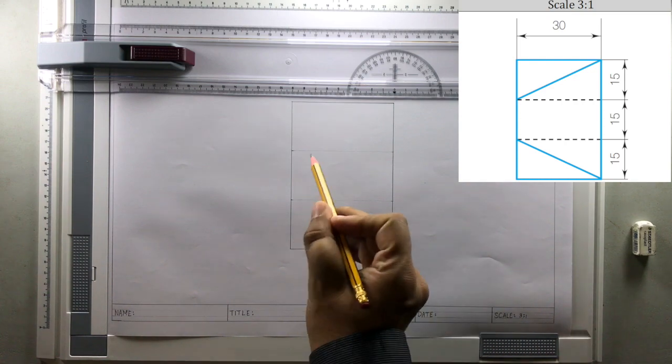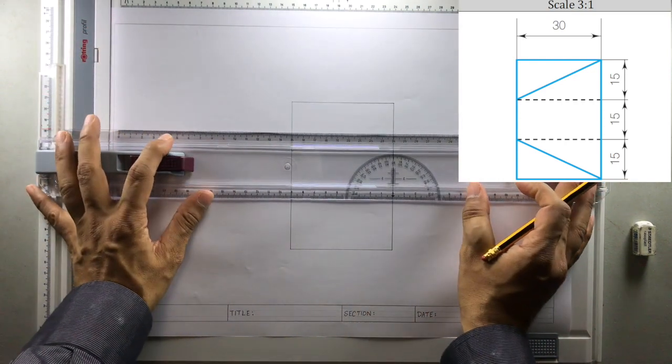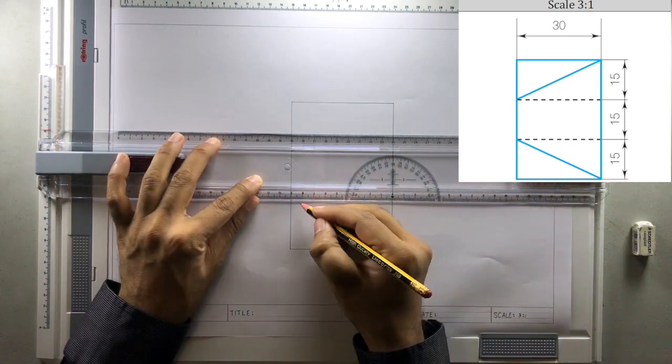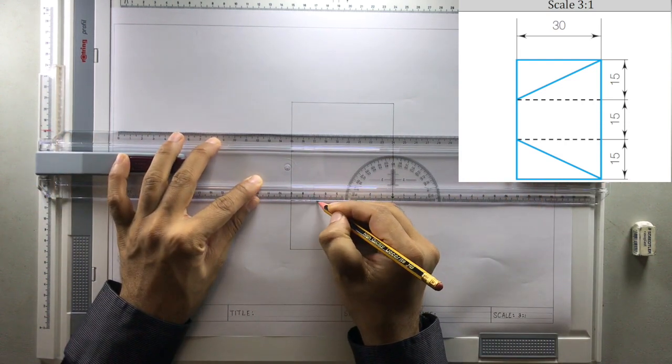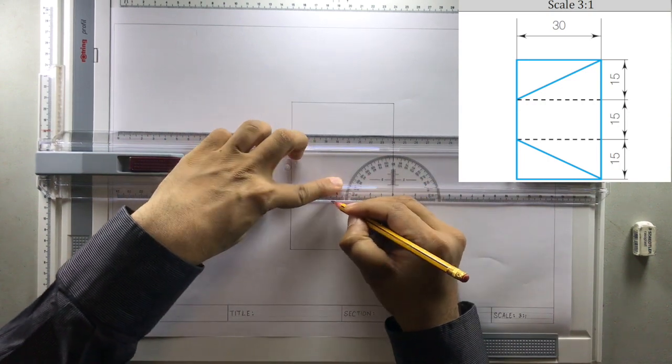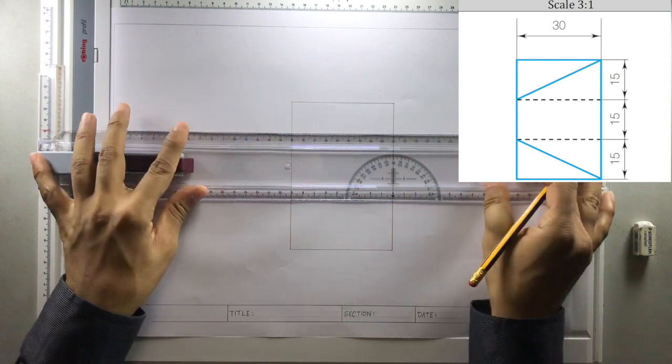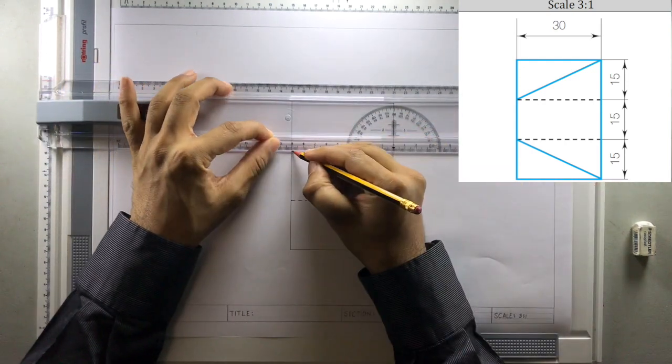Now, the two horizontal lines which are to be marked here and here are dotted lines. So let's mark the dotted lines here. Likewise, here also, it has to be dotted lines.